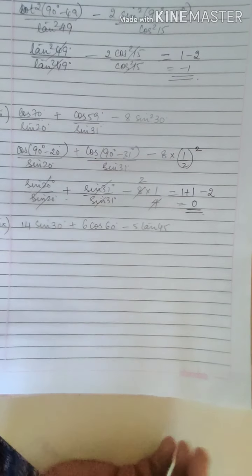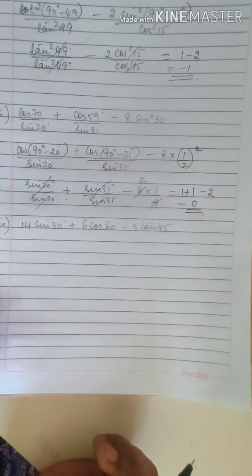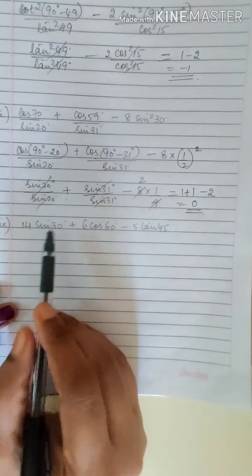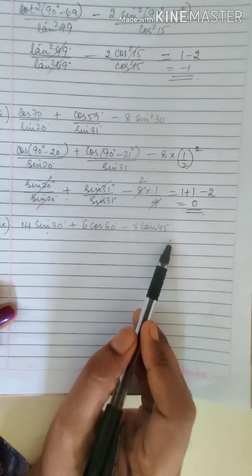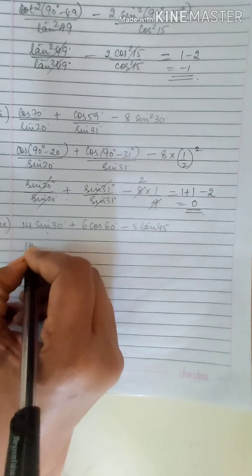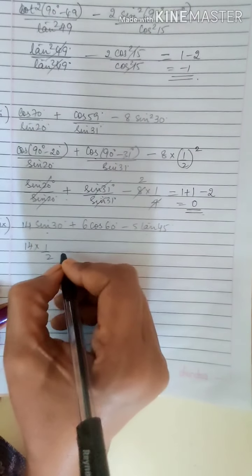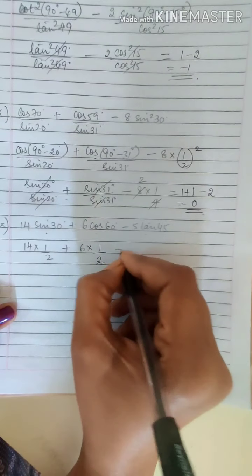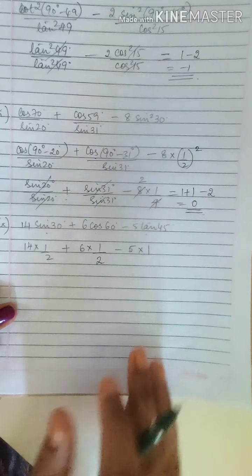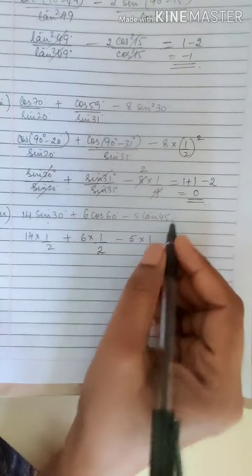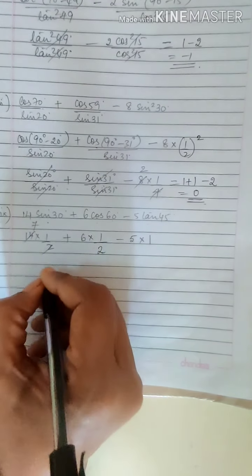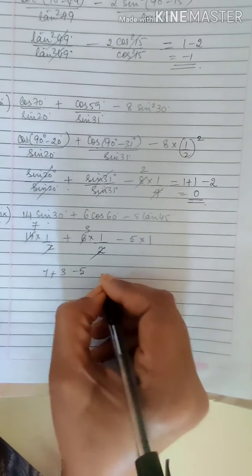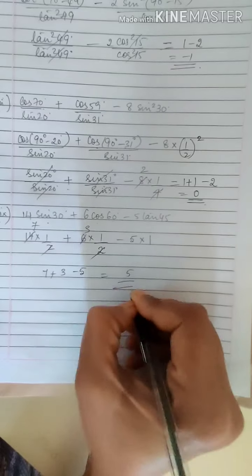The next one: 14 sin 30 plus 6 cos 60 minus 5 tan 45. Here you know the values of sin 30, cos 60, and tan 45. Just substitute the values: 14 into 1/2 plus 6 into 1/2, because cos 60 is 1/2, minus 5 into 1, because tan 45 is 1. So this gives 7 plus 3 minus 5, which equals 5.